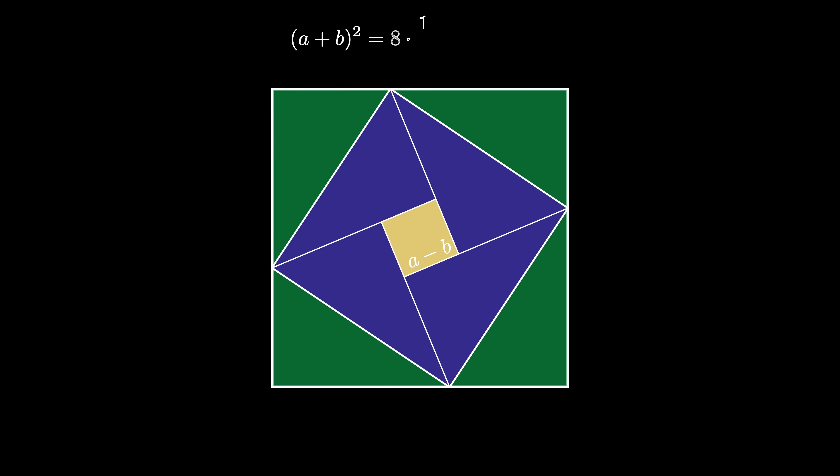On the other hand, we've used 8 triangles plus the inner square, so we have an area of 8 times a half ab plus the quantity a minus b squared. We can simplify the 8 triangles to have the area 4 times a times b.